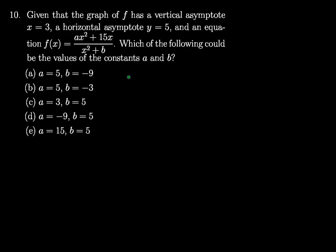Let's first look at our horizontal asymptote, y equals 5. We know if we have a horizontal asymptote, that means our limit as x goes to positive infinity of f of x must equal 5.